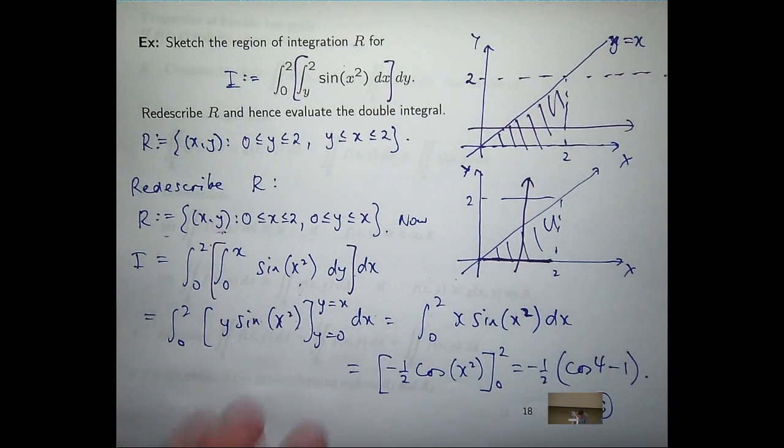Just subbing in x equals 2 and x equals 0, I'll get something like this. That's a reasonably challenging question. It asks you to not only sketch the region of integration, but re-describe it, switch the order of integration, and then actually do the integration. That's a challenging question.